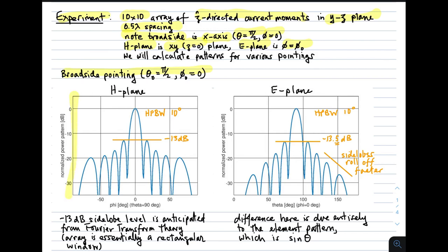The h-plane looks like this. We see a half-power beam width of 10 degrees. We see minus 13 dB side lobes because this array is uniformly excited. In other words, that minus 13 dB side lobe level is the one anticipated by Fourier transform theory because the array is essentially a rectangular window.